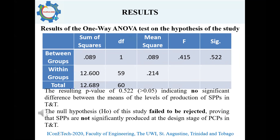The results of the one-way ANOVA test on the hypothesis indicated that no significant difference between the mean and the level of production of subsidiary project plans in Trinidad and Tobago existed. Therefore, it failed to reject the null hypothesis, proving that subsidiary project plans are not significantly produced at the design stage of public construction projects in Trinidad and Tobago.